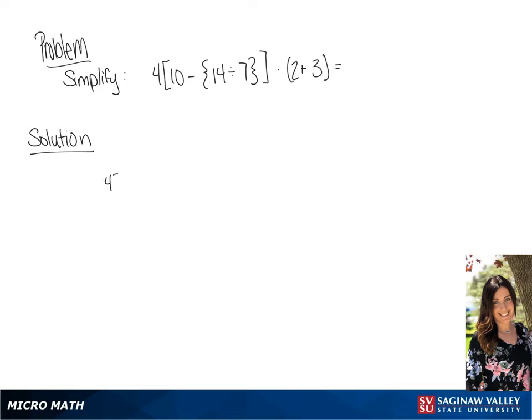We are going to simplify 4 times 10 minus 14 divided by 7 times 2 plus 3 using order of operations. The first thing we're going to do is address everything that's in the parentheses and brackets.